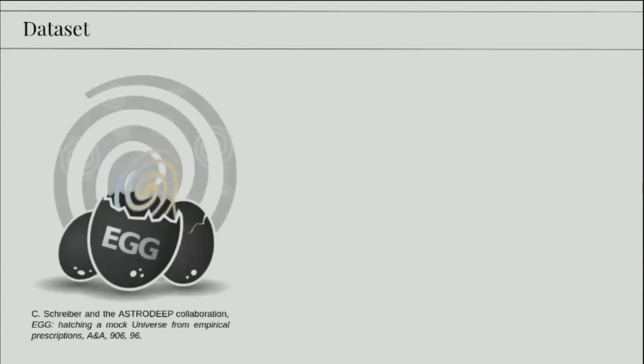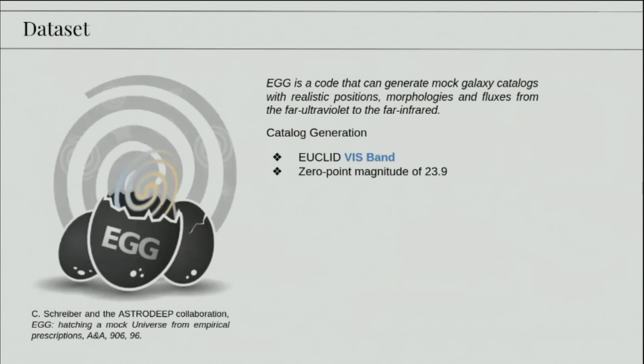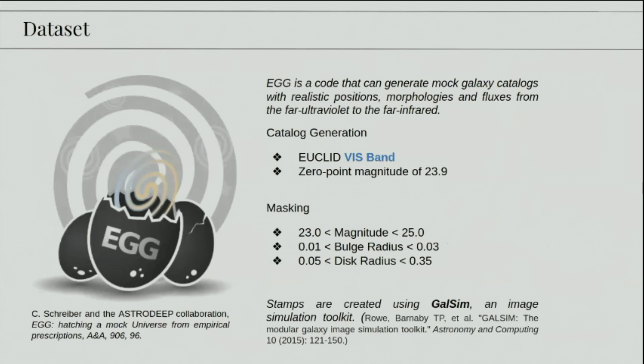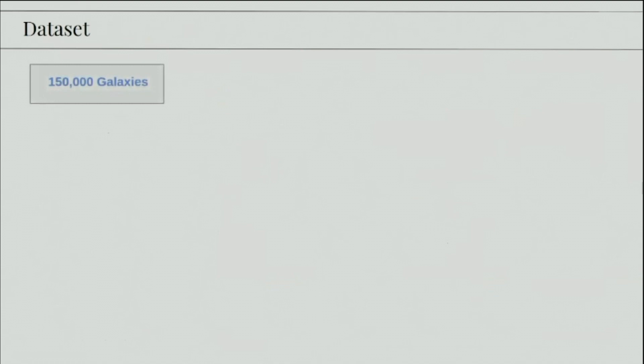So for our dataset, we use simulated galaxy images. These were created using EGG, that's a code that can generate mock galaxy catalogs with realistic positions, morphologies, fluxes, from the far ultraviolet to the far infrared. We generated catalogs for the Euclid visible band with a zero point magnitude of 23.9, and we also made some cuts on magnitude and bulge radius and disk gradients, so as to keep our distribution more uniform. And finally, the stamps were created using GalSim, which is an image simulation toolkit.